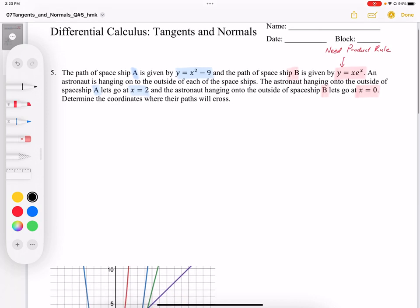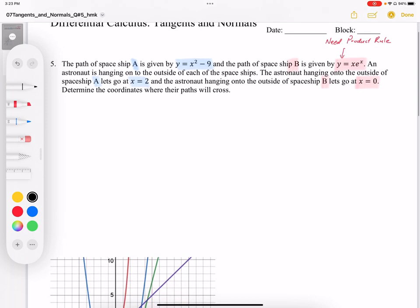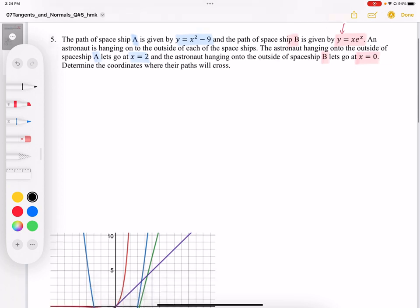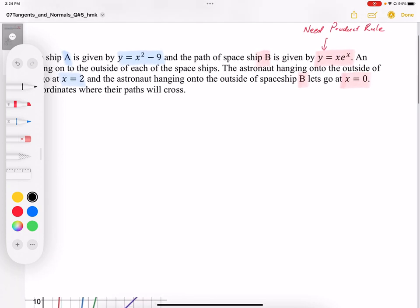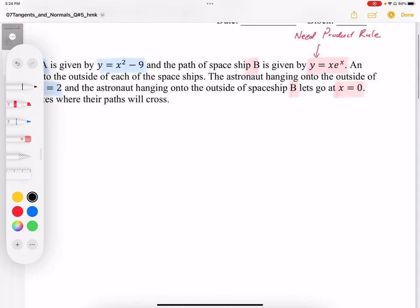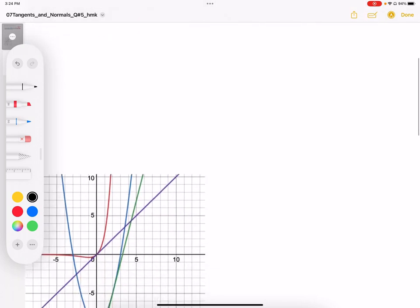And this problem involves a spaceship traveling in the path of the parabola, x squared minus 9 in blue. And then also in the path of this exponential function, e to the x, x e to the x, which I've shown in red.